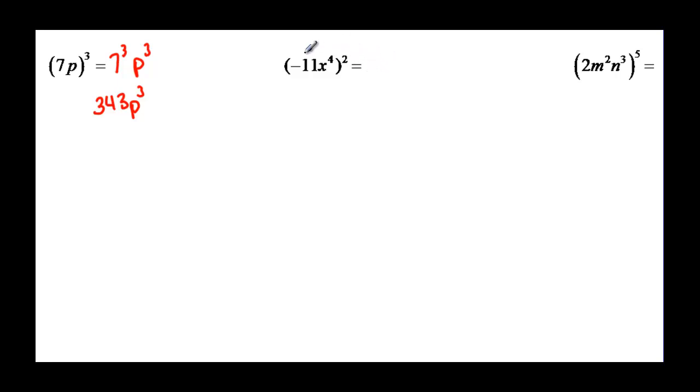And now we have again a product that is raised to a power. So we have negative 11, that number is going to be squared just like the variable. And x to the 4th is going to be squared. And negative 11 times negative 11 is a positive 121. And x to the 4th squared, remember we are going to multiply those exponents. So 4 times 2 will be 8. So 121 x to the 8.